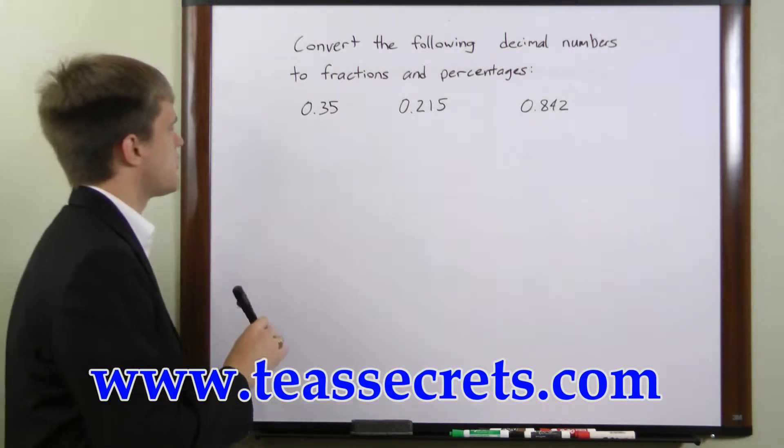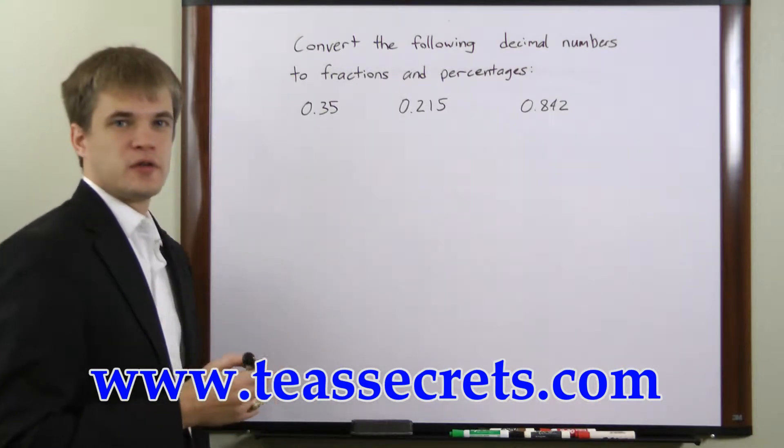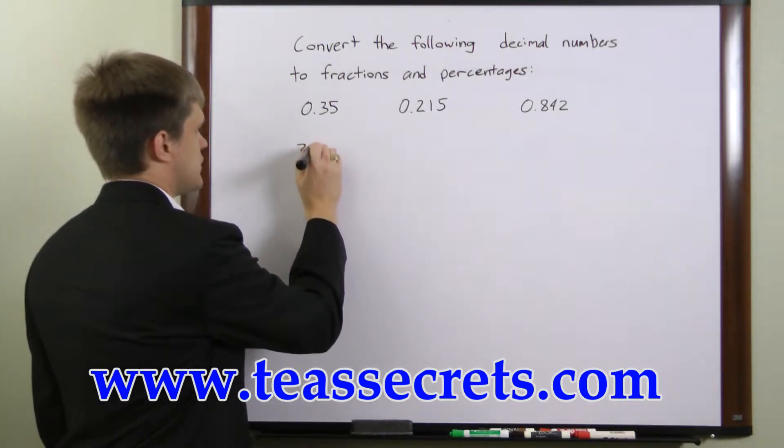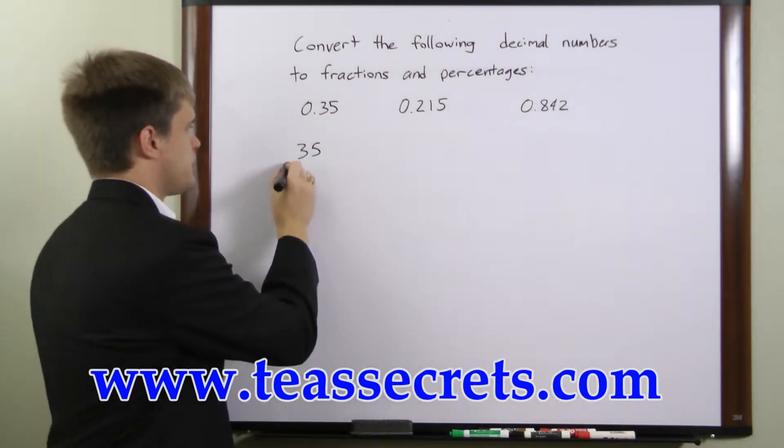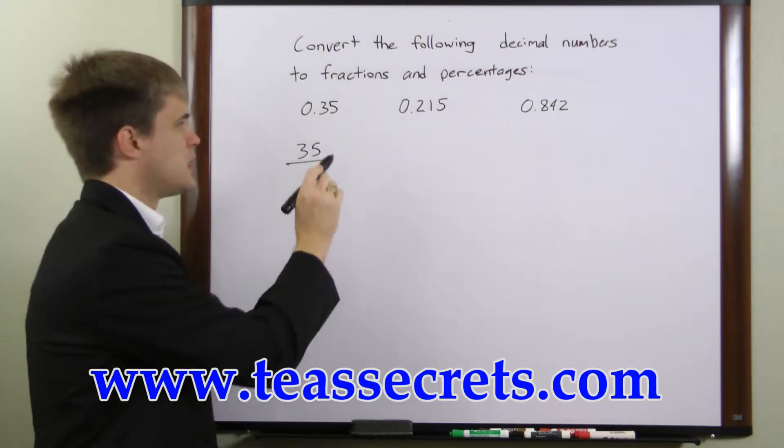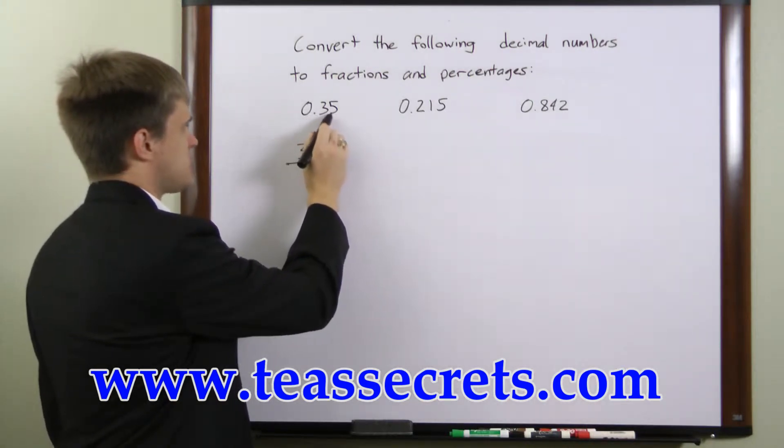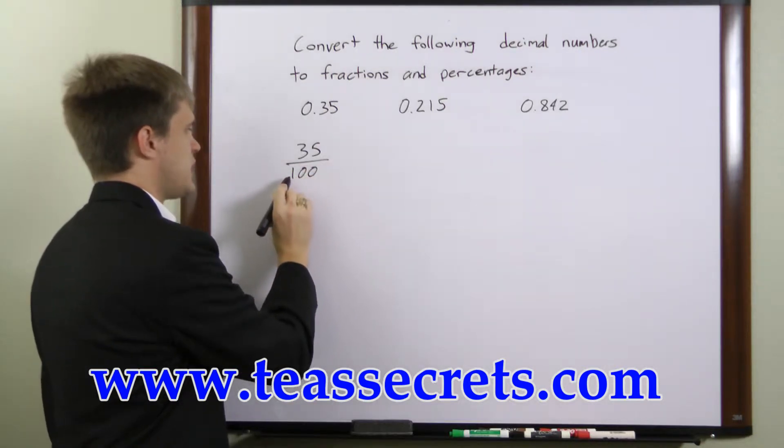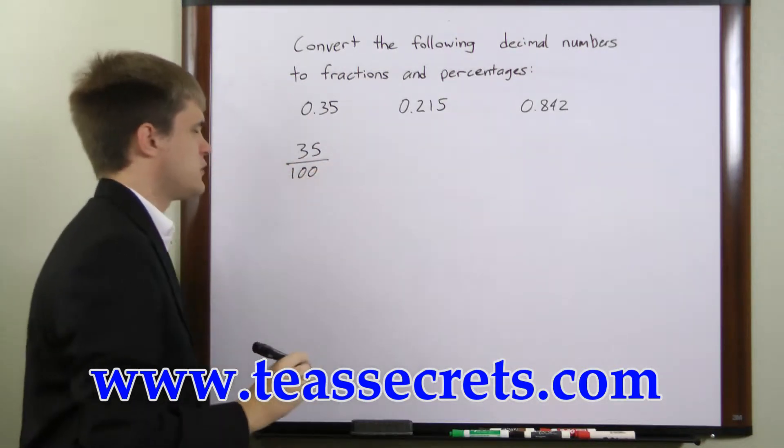First we have 0.35. To convert 0.35 to a fraction, we'll write the two digits in here as the numerator and we'll take a look at the rightmost digit. The rightmost digit is two decimal places to the right of the decimal, so we're going to write two zeros in the denominator, so we have 35 over 100.